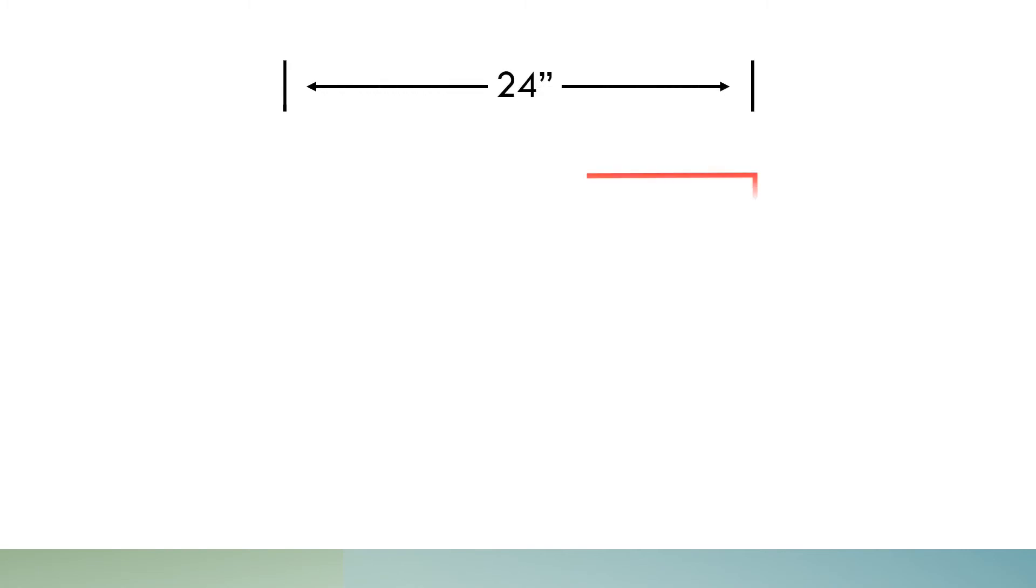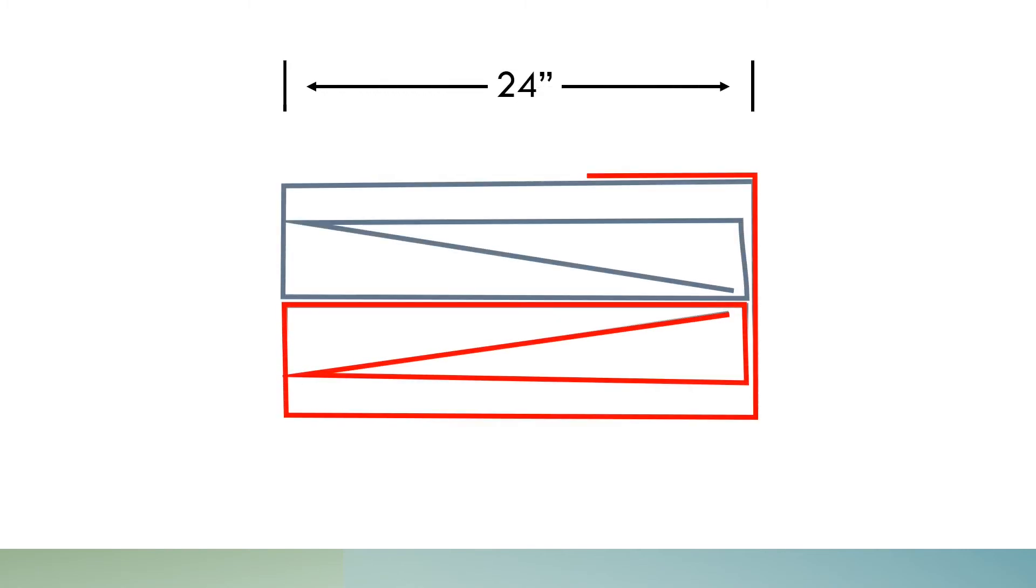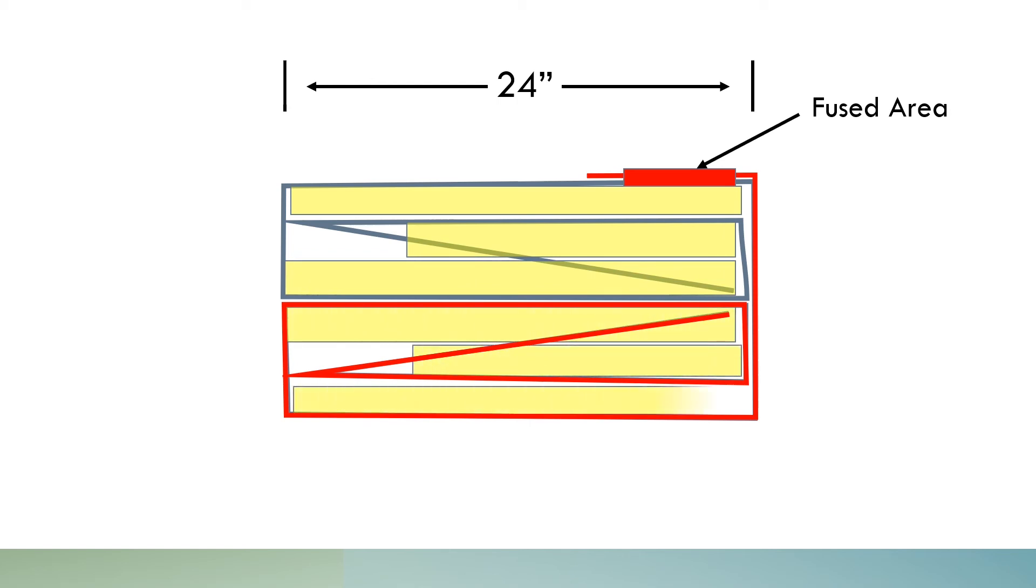I used the different color to indicate two different coroplast sheets being fused together. The yellow are the pockets. I allow one and a half inch as the thickness for each pocket and the overall thickness of the package is 9 inches. You may choose to use one inch to make it thinner.